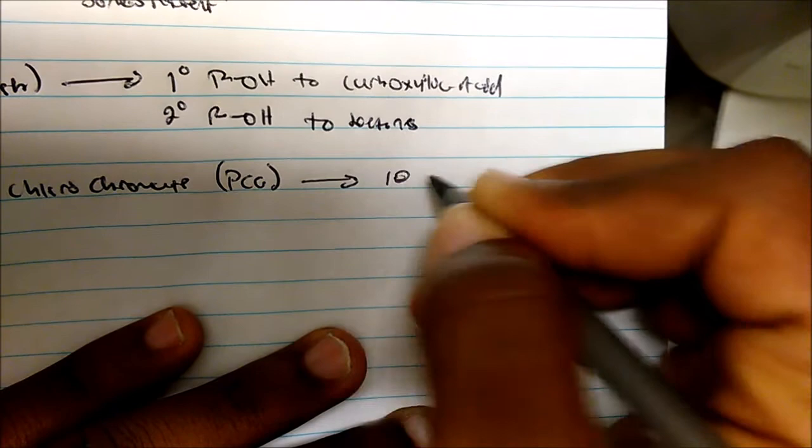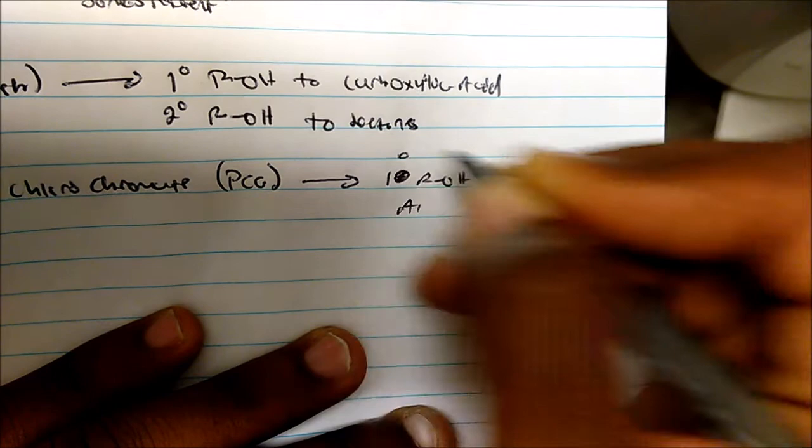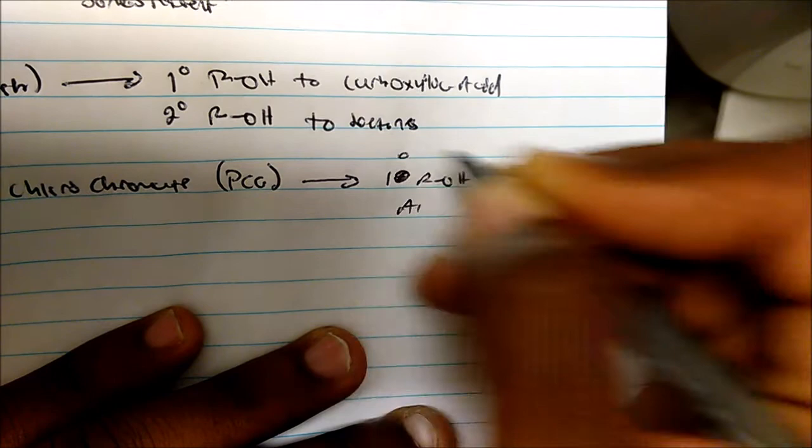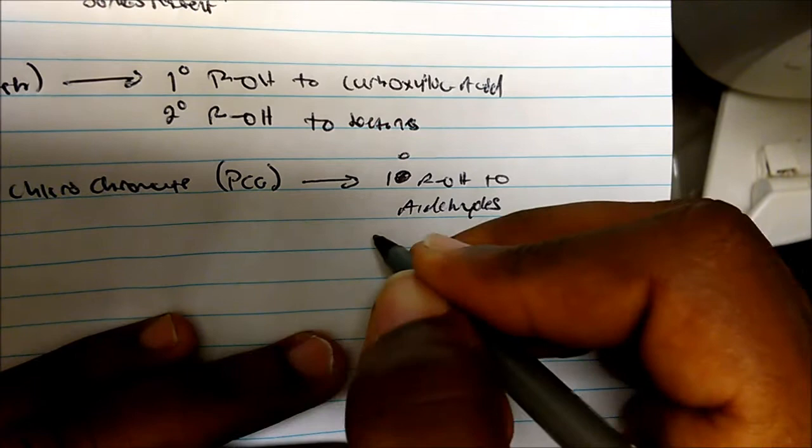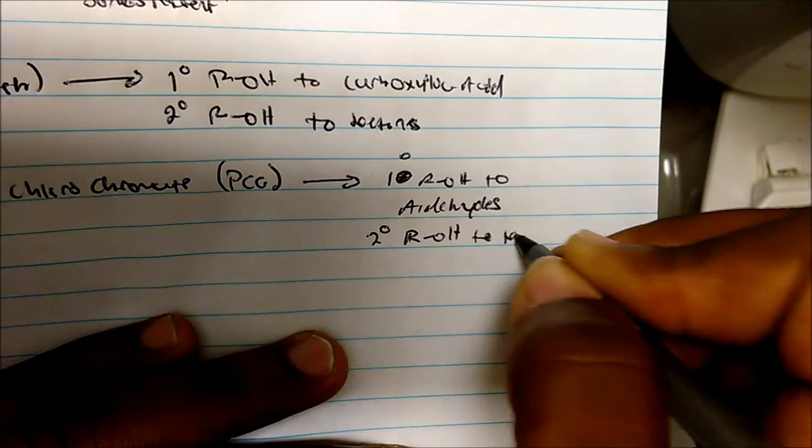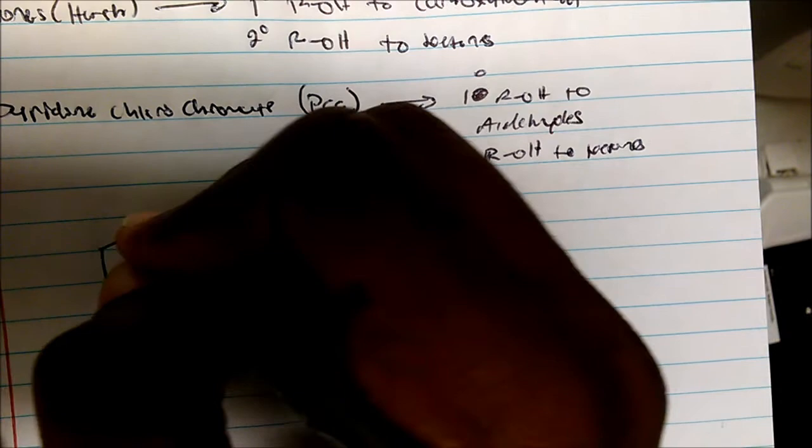And what this does is that this oxidizes primary alcohols to aldehydes. And these are just stuff you're going to have to remember. And then this also oxidizes secondary alcohols to ketones. So you get ketones from secondary alcohols with PCC.